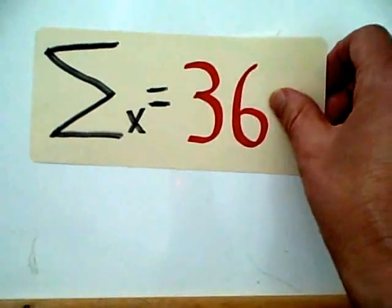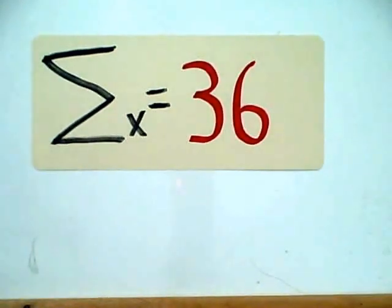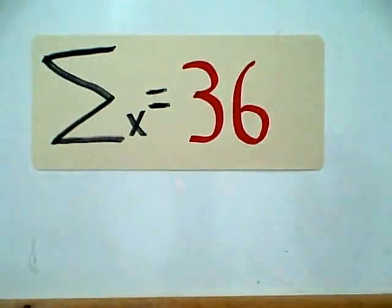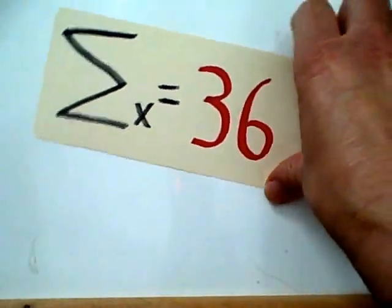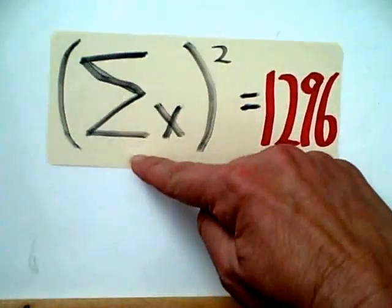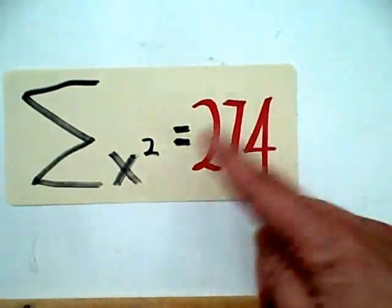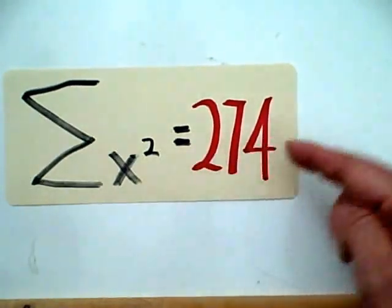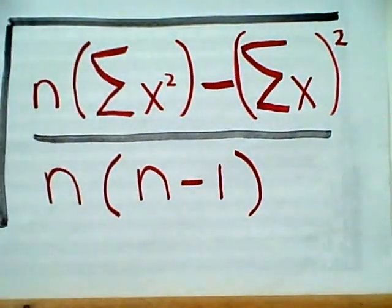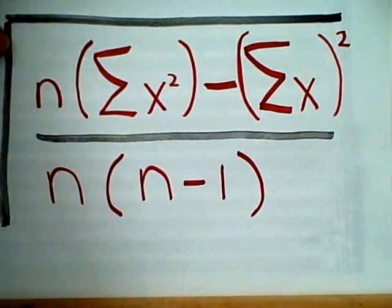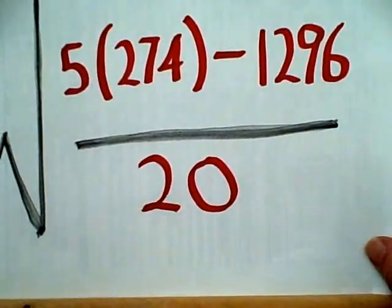Now, we add up the sum of all the scores, and we get 36. If we were to square that 36, that would give us what this looks like. That's 1296. The other thing we need to make this equation work is the sum of all the individual squares. That's 274. So, we take this equation and let's plug in the numbers that we have here.